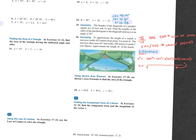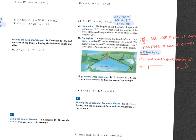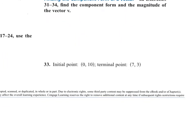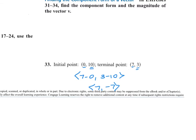So sections 6.1, 6.2, start of 6.3. First it asks for component form and the magnitude. Component form is terminal minus initial: 7 minus 0 and 3 minus 10. So I get 7, negative 7 — that's the component form.